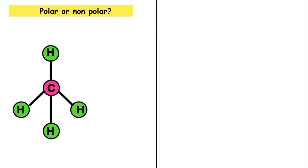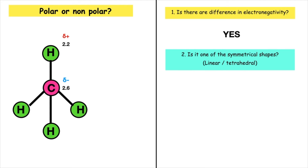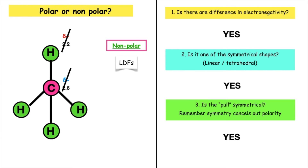Let's go through an example and decide whether this molecule is polar or non-polar. Question one: is there a difference in electronegativity? The electronegativity of carbon is 2.6 and hydrogen is 2.2, so we do have a difference in electronegativity. Question two: is it one of the symmetrical shapes — linear or tetrahedral? Yes, this shape is tetrahedral. Is the pull symmetrical? The four atoms around the central atom of carbon are the same, which means the pull will cancel out polarity, so therefore this molecule is non-polar and only has LDFs.